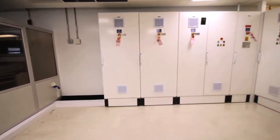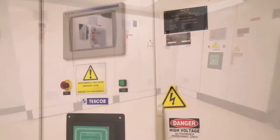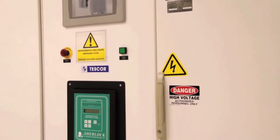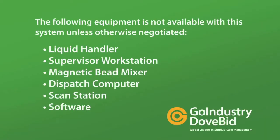The solar dizygotic system has a floor mounted 460 volt power supply with control cabinets. Due to software constraints and client requests to redeployment, the following equipment is not available with this system unless otherwise negotiated: liquid handler, supervisor workstation, magnetic bead mixer, dispatch computer, scan station, and software.